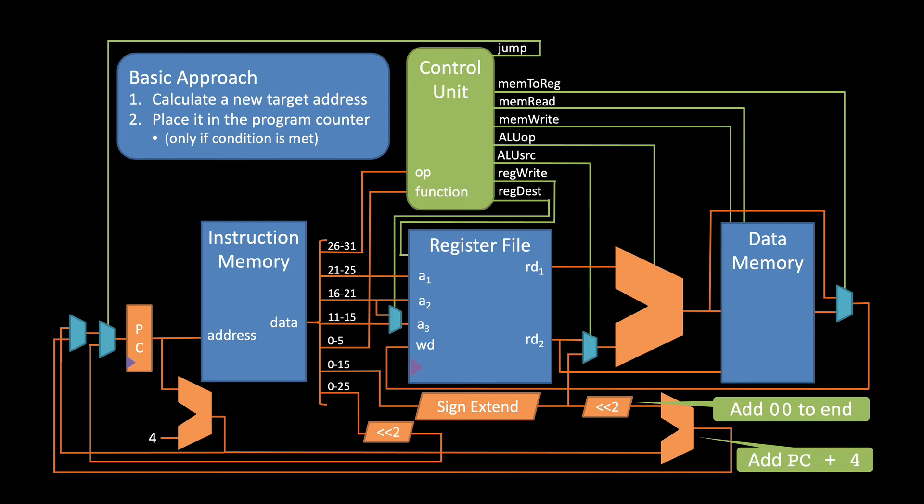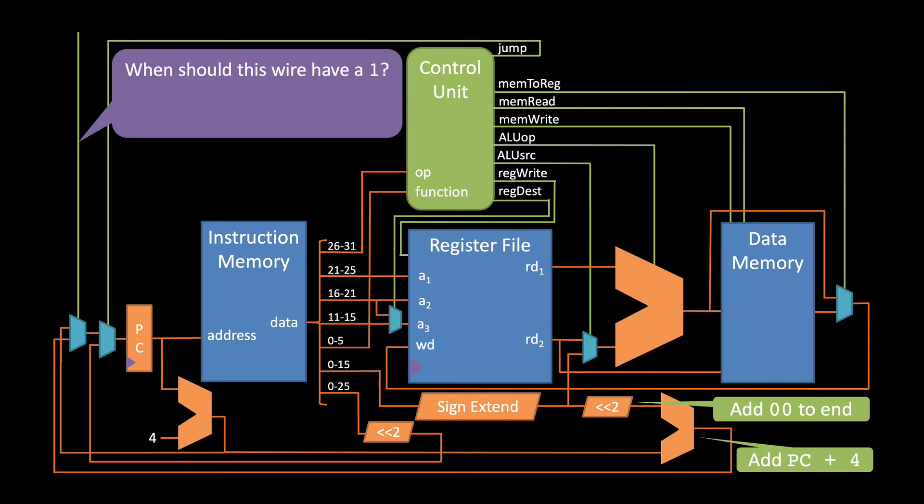This time, however, the MUX's selector is not simply a control wire. Think about it. When should the selector wire have a one on it? Well, it should only have a one on it when both the instruction is a branch and the two source registers are equal. If either of those conditions is not met, we want to run the next instruction as normal. All right, so let's add a control wire indicating whether or not the instruction is a BEQ. Now, the next question is, how can we tell if the given registers are equal?